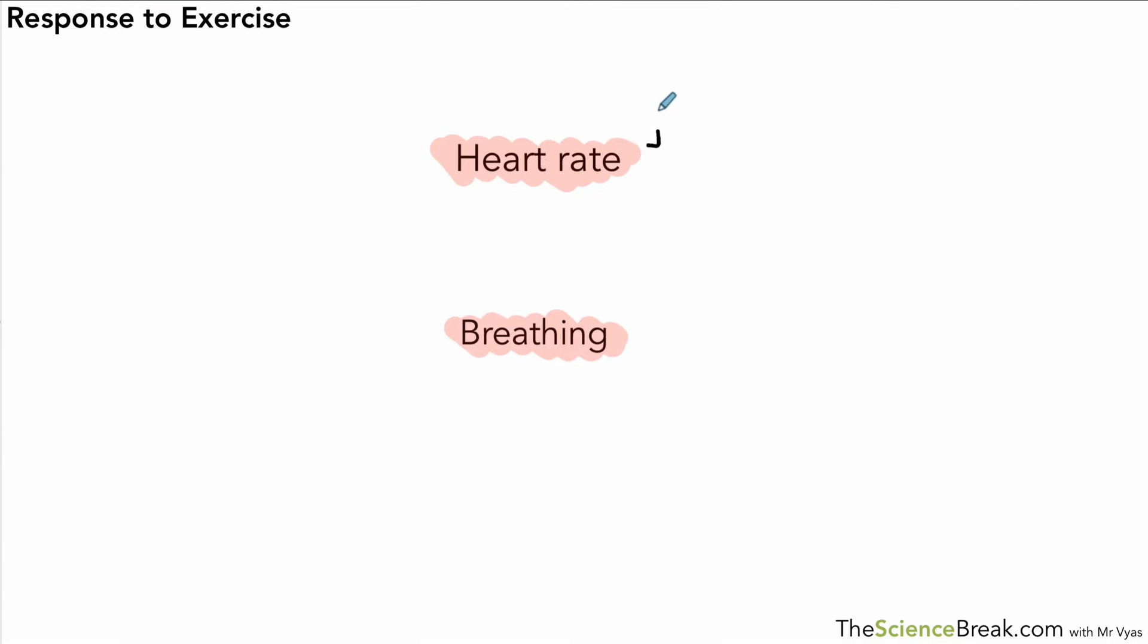So firstly, in terms of the heart rate, if the body starts to exercise, the heart rate increases. The reason why this increases is because it can then supply more glucose and oxygen to the respiring tissue, usually muscles that are working hard when you're exercising. If we have more glucose and oxygen, that means the respiring tissue is able to carry out more aerobic respiration.